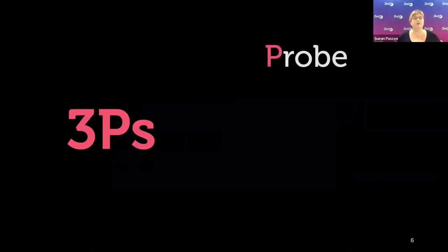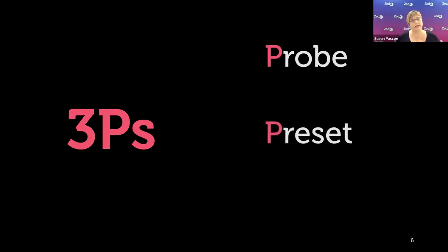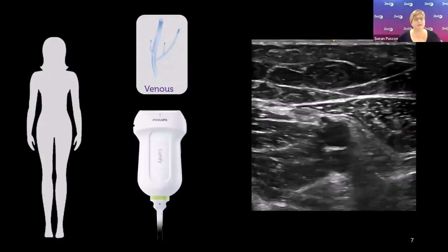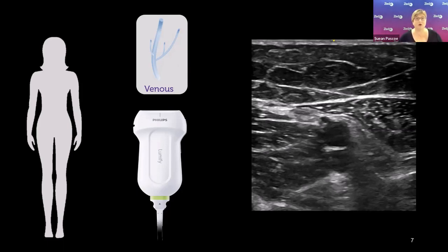In preparing for the examination think about the three Ps: the right probe, the right preset, and patient positioning. For an average-size patient, start with a lower-frequency linear probe — something like 10–5 MHz or 12–4 MHz. If you have more than one linear probe, choose the lower frequency, because as vessels go deeper toward the mid-thigh, that lower frequency gives you greater penetration than a higher frequency probe.